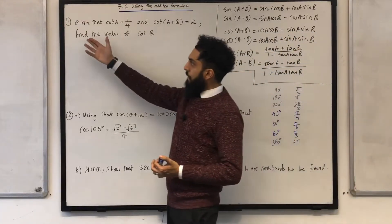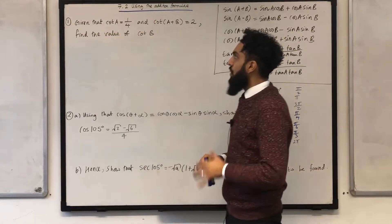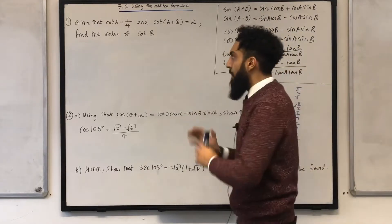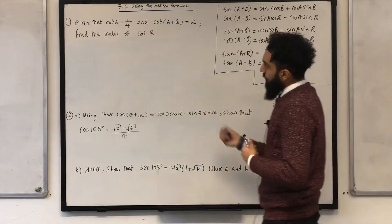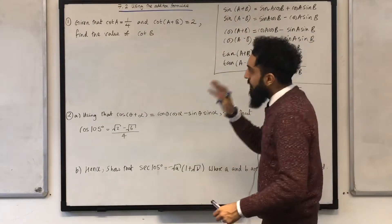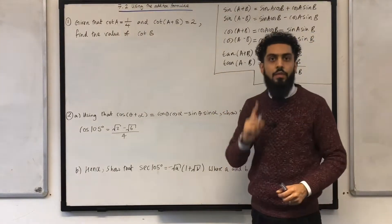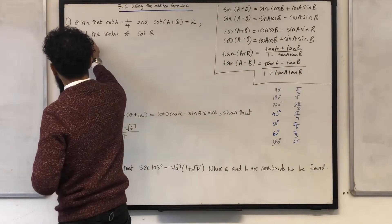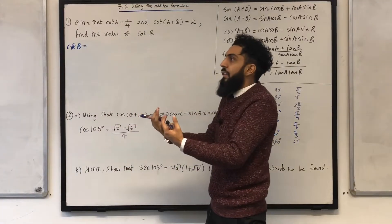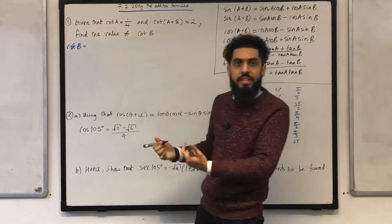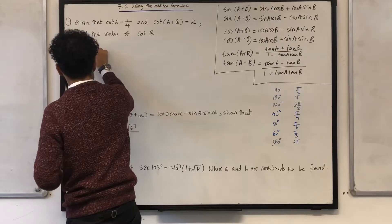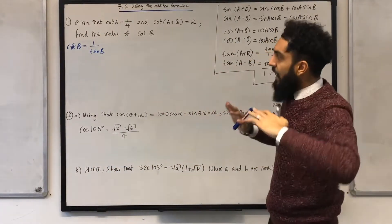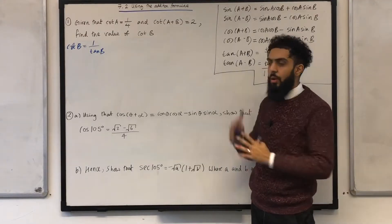Okay, so question number one, given that cot a is equal to 1 over 4 and cot(a + b) is equal to 2, find the value of cot b. First of all, my target, ladies and gents, my target is to find the value of cot b. So, I can start off with cot b equal to what. I know about cot b is that it will be equal to 1 over tan b. Okay, so what I need to do is find tan b. If I can find tan b, I can then calculate cot b.